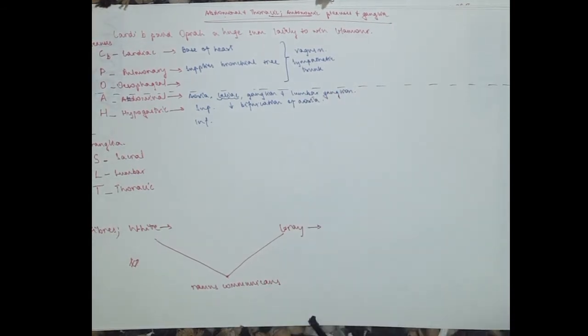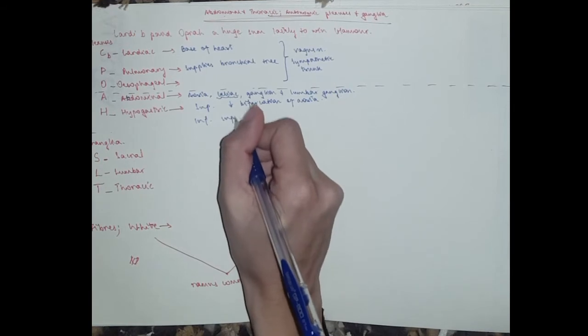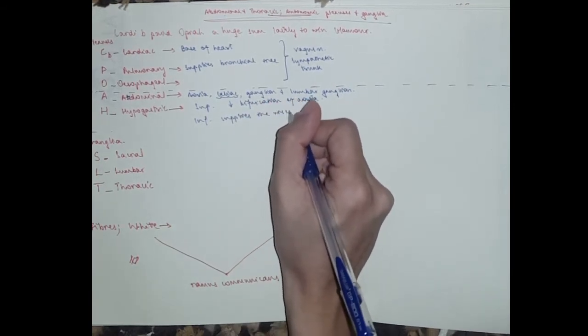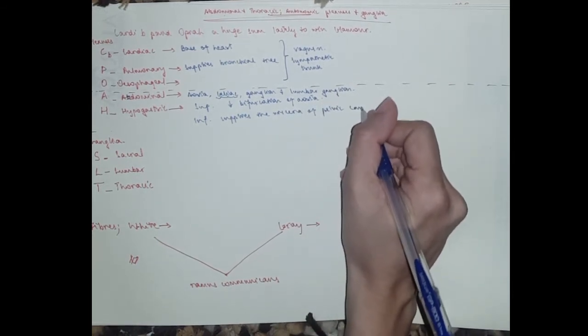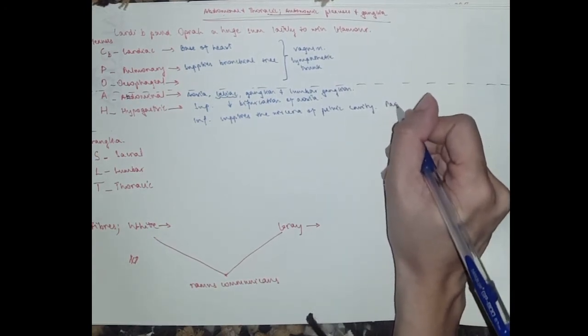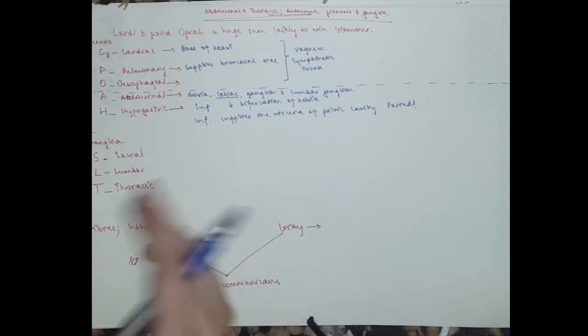So below the bifurcation of the aorta. The inferior one is also known as the pelvic plexus in some textbooks because it supplies the viscera of the pelvic cavity.